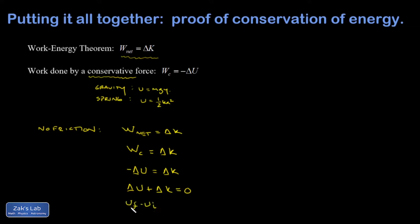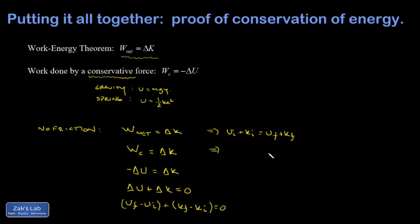Expanding the deltas: delta U is U final minus U initial, and delta K is K final minus K initial. Moving the initial terms to one side gives U initial plus K initial equals U final plus K final. The potential energy and kinetic energy added together give the exact same number in the initial state as in the final state. We define a new term, E, called the total mechanical energy, which is simply potential energy plus kinetic energy.